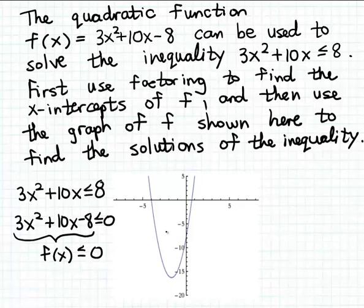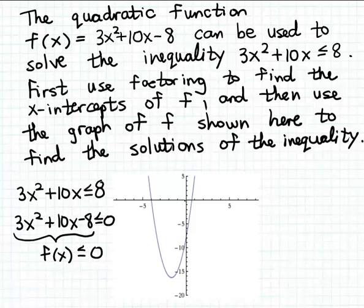We can find these inputs x by observing the graph of the function f. Here we have the graph of f, which is 3x squared plus 10x minus 8. We can see from the graph that the inputs x making the output f of x less than or equal to zero are the x values between the two x-intercepts, because it's between these two x-intercepts where the graph is below the x-axis. So the solution set is this interval between the two x-intercepts.